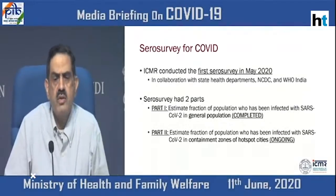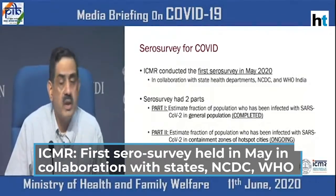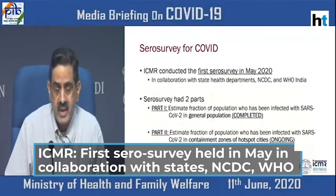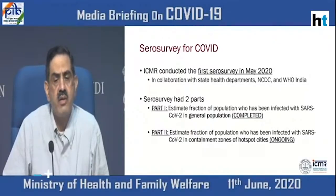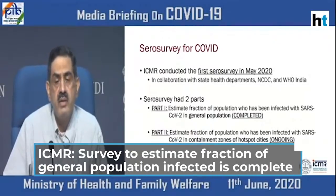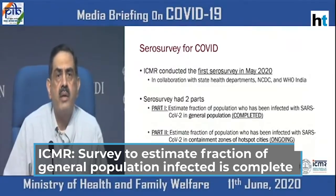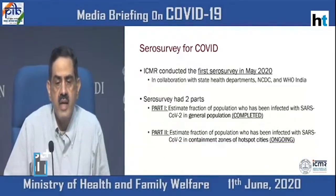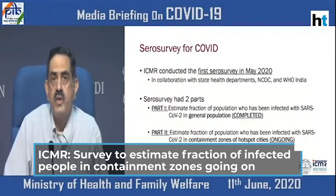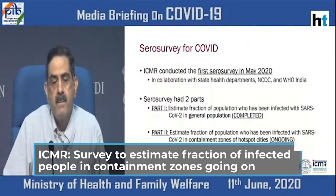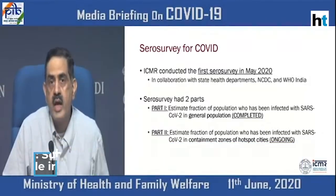This was the first serosurvey conducted in May in collaboration with the state health departments, the NCDC, and the WHO. It had two parts: the first part was to estimate the fraction of the population infected with SARS-CoV-2 in the general population, which is now complete. The second part is to look at the prevalence of SARS-CoV-2 infection in containment zones in hotspot cities, and that is ongoing.